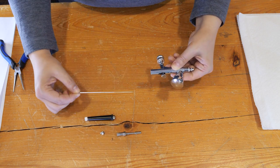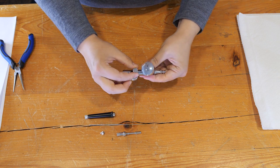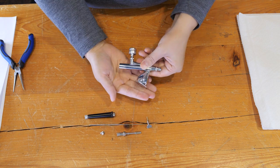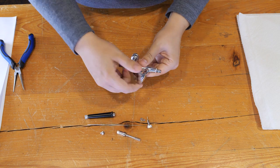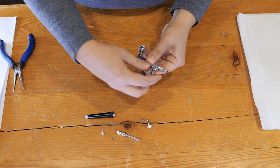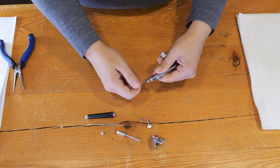Now pull out the needle. At this point you can remove the trigger as well as this small piece by flipping it over. Remove the paint cup. Then remove the nozzle pieces.